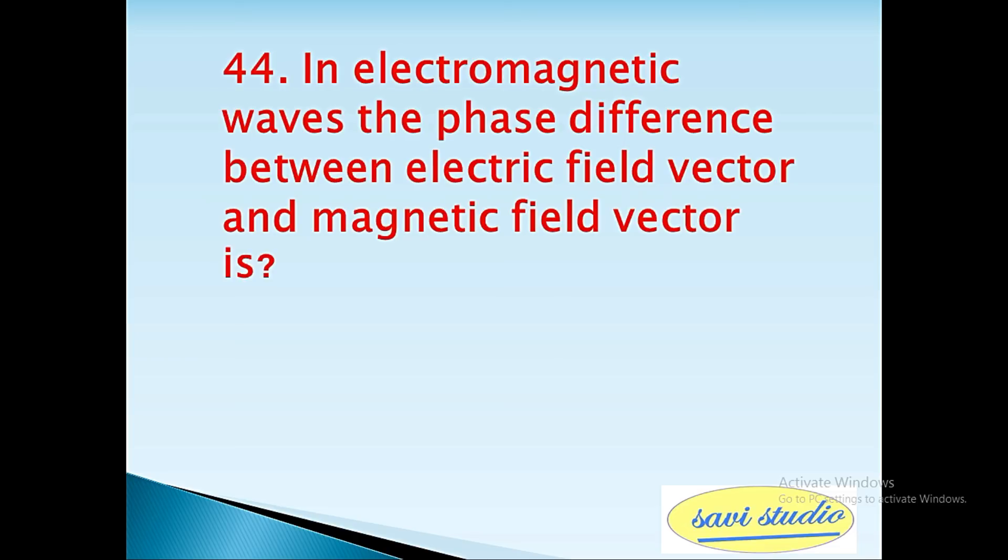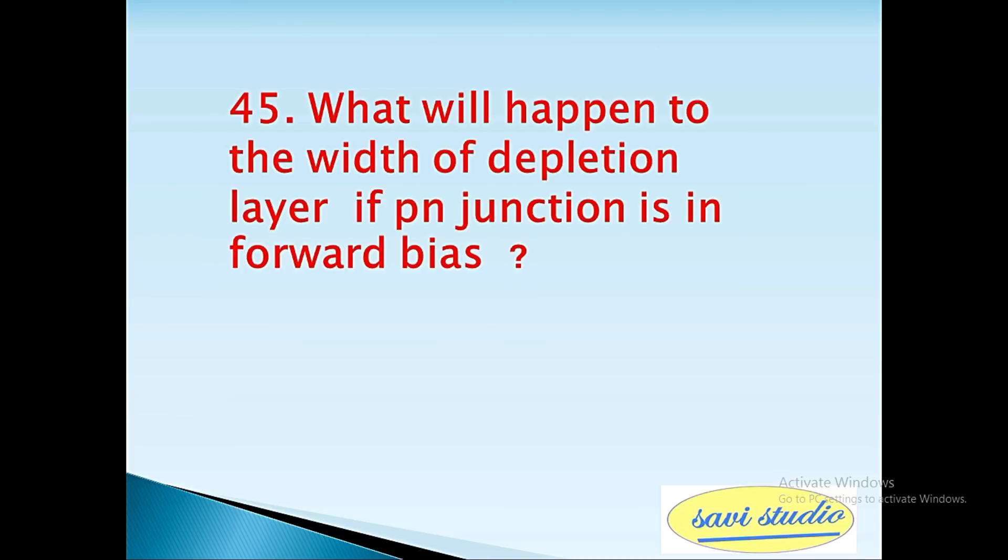44th question: In electromagnetic waves, the phase difference between electric field vector and magnetic field vector is? Answer: 0. 45th question: What will happen to the width of depletion layer if p-n junction is in forward bias? Answer: width will decrease.